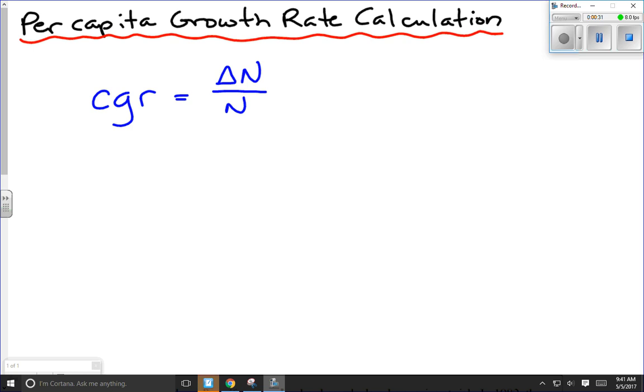We don't want to confuse that with the growth rate formula. GR is equal to delta N over delta T, where delta T is change in time. In a per capita growth rate calculation, we don't really care what the time frame is. In a growth rate calculation, it's the change in the population size per unit time, not per individual.